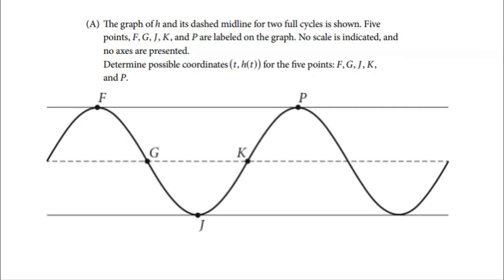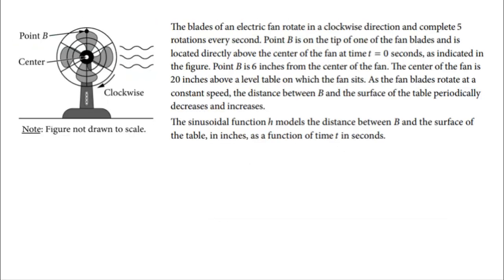In Part A, you're asked to find five labeled points on a graph of two full cycles. The graph of H and its dashed midline for two full cycles are shown. Five points F, G, J, K, and P are labeled on the graph with no scale or axes indicated. My advice: don't jump to labeling the points on the given graph. Instead, go back to the problem, create your own function and graph, and then make your graph fit theirs.